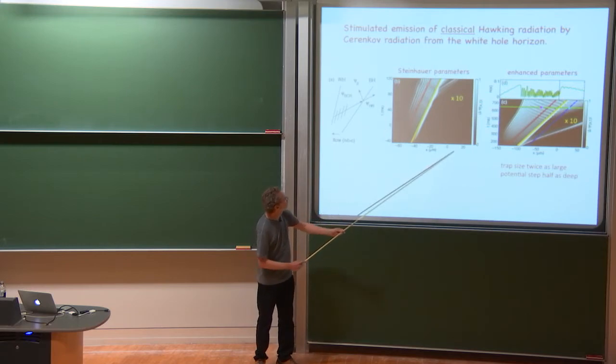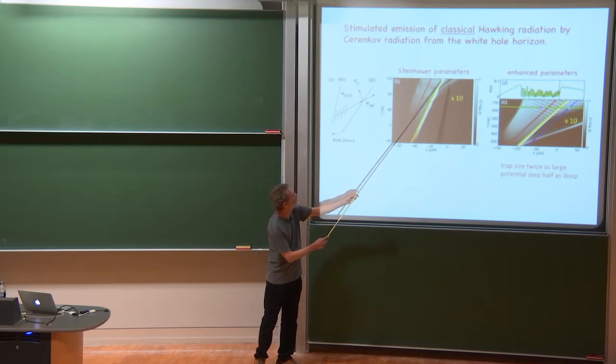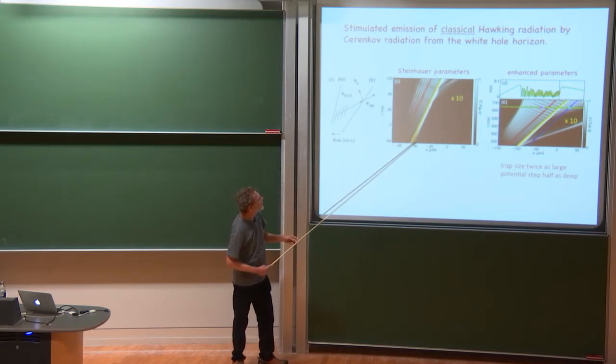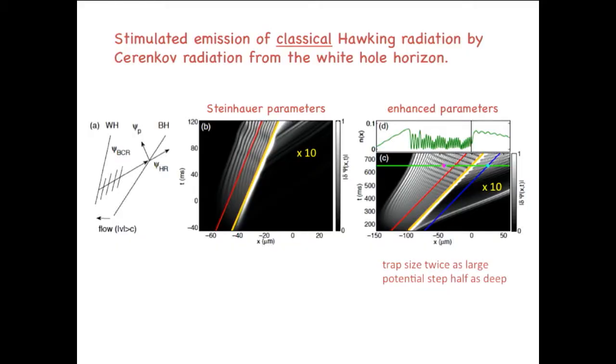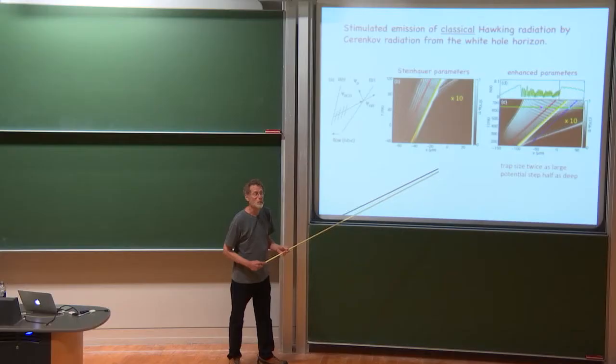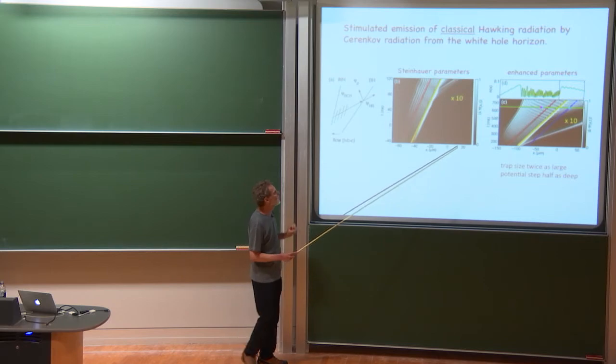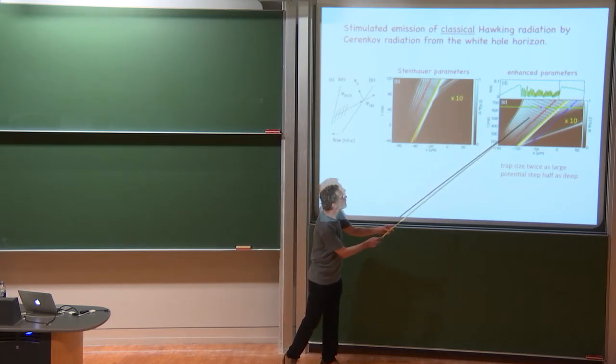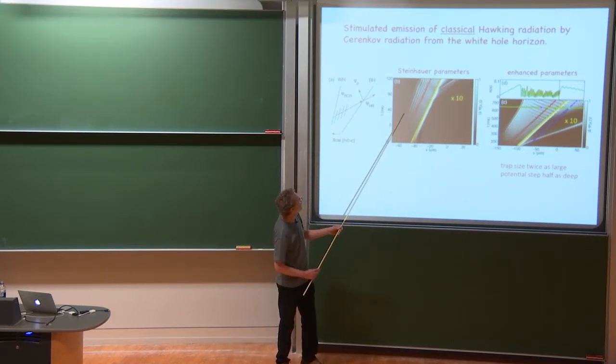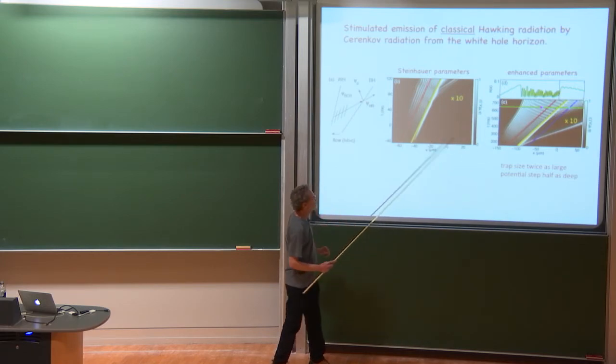And then we also considered a slightly enhanced case, which was almost the same, but this trap was twice as large and the potential step was half as deep. And that difference actually made a huge difference in how sharp the signal we could get was. But it seems like the same basic phenomenon is happening. And that phenomenon is the following as we understand it.